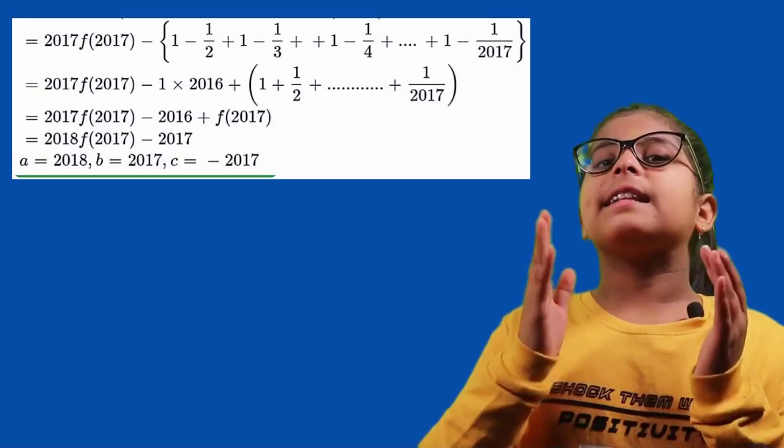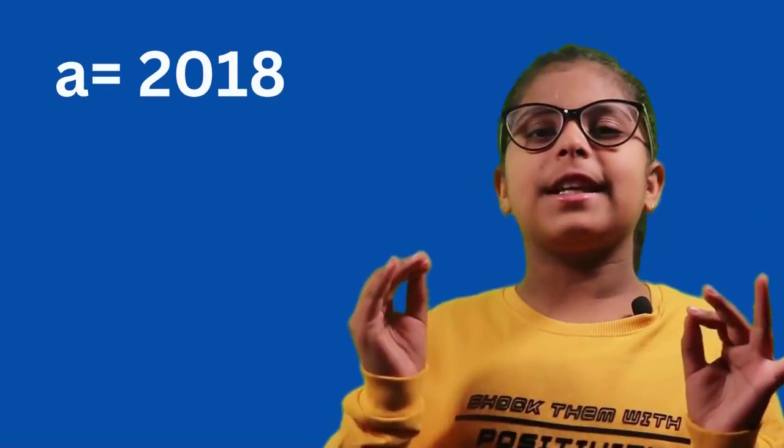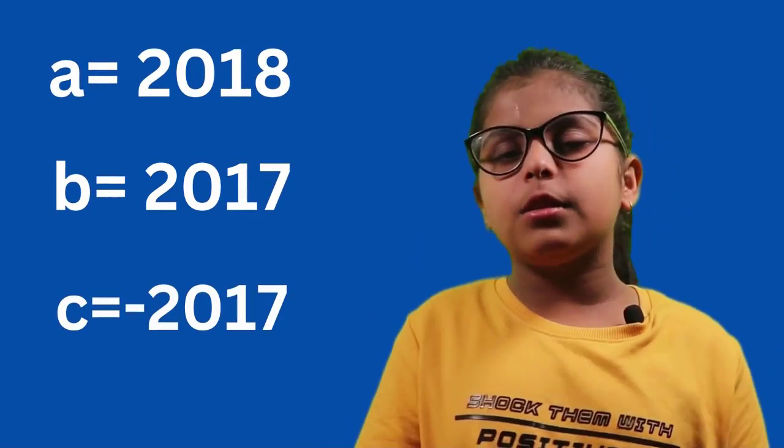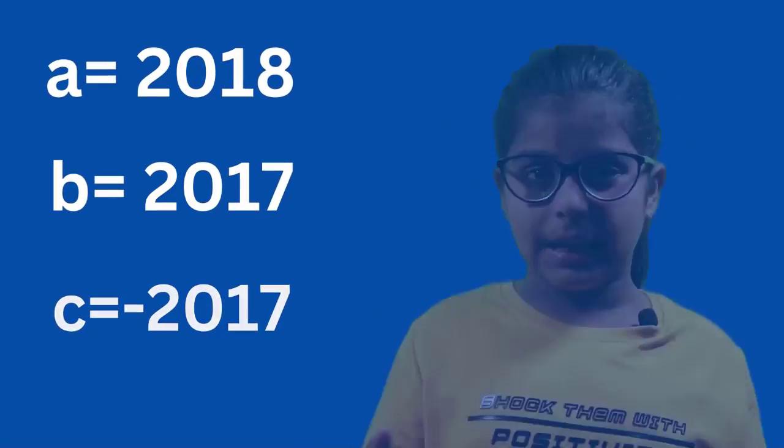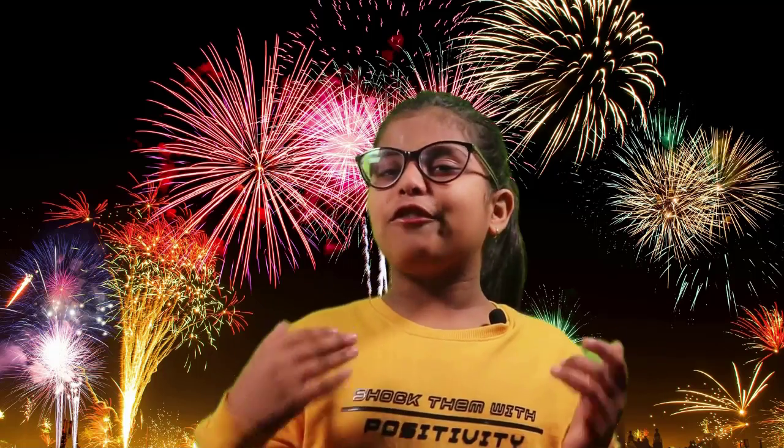I think you can guess easily. Further steps are very easy and you can do it yourself. We have to just add and simplify here, and you can check with the given explanations. And finally, we get a is equal to 2018, b is equal to 2017, and c is equal to minus 2017. Hence, the answer choice B is correct. I wish you a very happy new year. Bye bye.